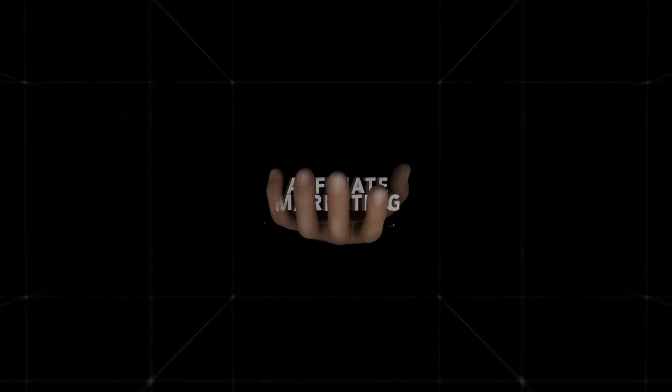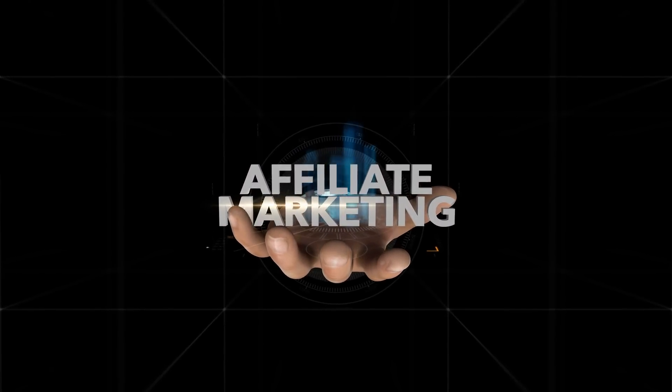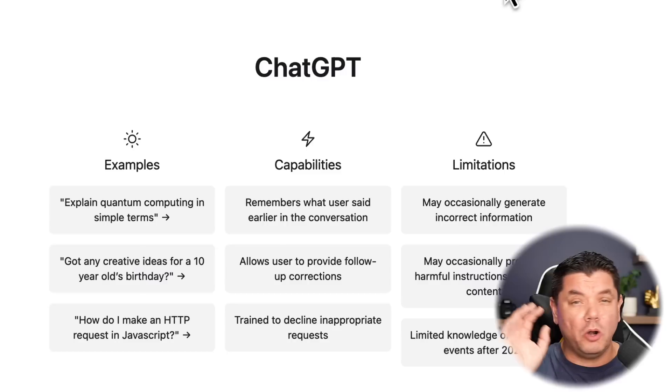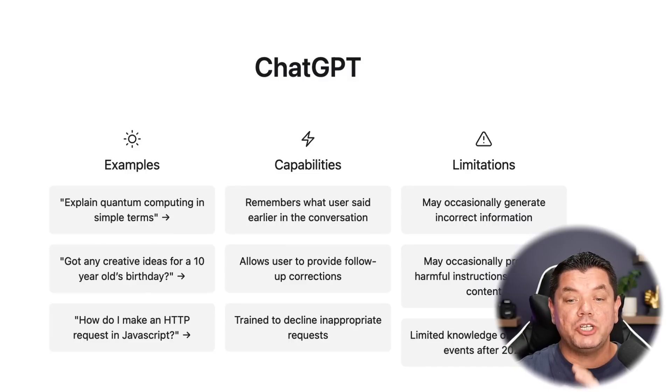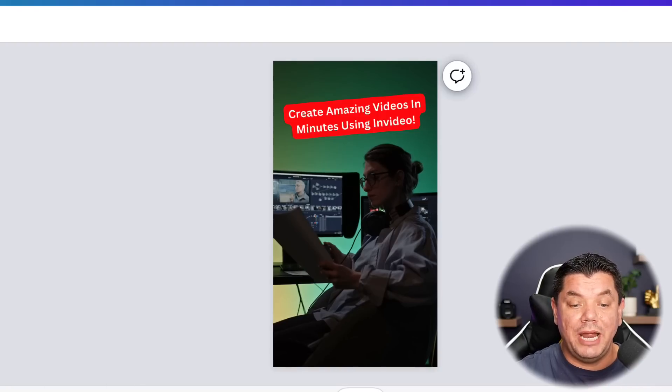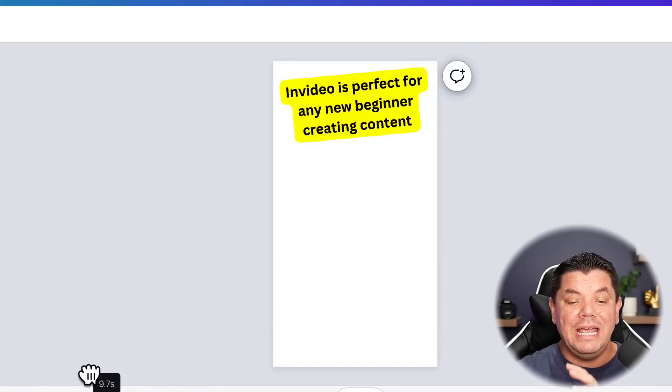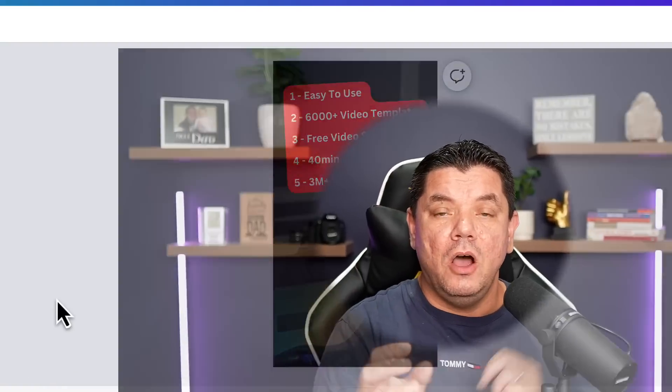I want to show you where you can find a whole range of different types of affiliate marketing products — not on ClickBank, not on Warrior Plus, not on JVZoo. I'm going to show you how to use ChatGPT to find these different affiliate programs, then how to use another AI software to create videos in a matter of minutes, all absolutely for free. I'll also show you how to scale this 10x and make even more money with affiliate marketing content.